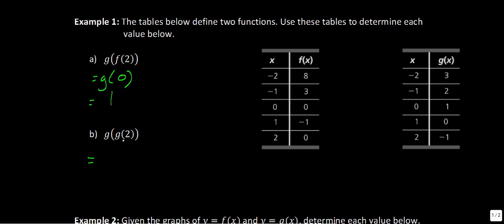Next, what happens if you take g of g of 2? We put 2 into the function g, figure out that answer, and then put that answer into g again. g of 2 is equal to negative 1. So we now have g of negative 1, and putting negative 1 into the function of g gives us an output of 2.